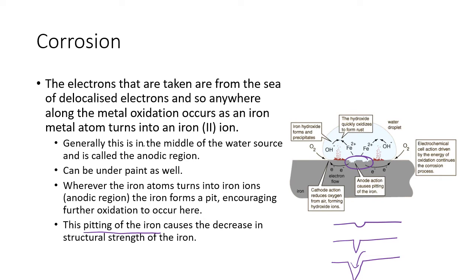The equation for this oxidation is Fe solid goes to Fe²⁺ plus two electrons. So it's giving up its electrons but not necessarily in the same place as where the oxygen took them from. And so this is called the anodic region. So the anodic region is here, generally in the center of the water, but it can also be under paint and under other stuff as well.